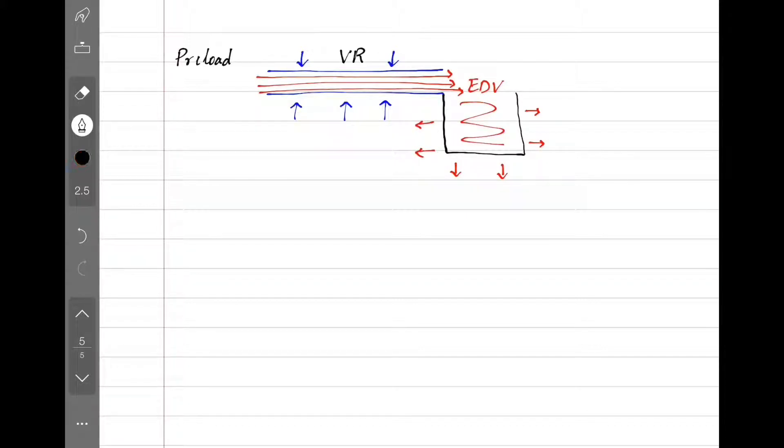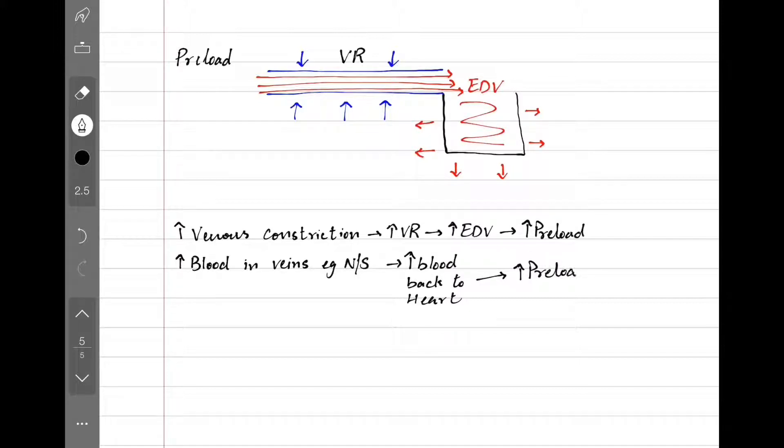So venous constriction increases venous return, gives us more end diastolic volume, which increases the preload. Similarly, more blood in veins, as seen after a normal saline infusion, means more blood coming back to heart which also increases the preload. Increasing the preload increases cardiac output, meaning the heart is working harder.